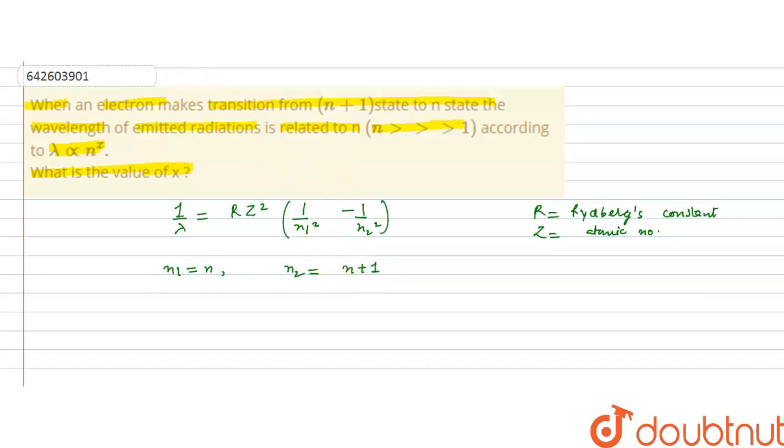So, if we put n1 and n2 values in this formula, we will get 1 by lambda is equal to Rz square into 1 upon n square minus 1 upon n plus 1 square, n plus 1 whole square.